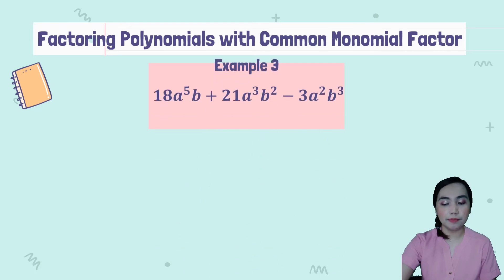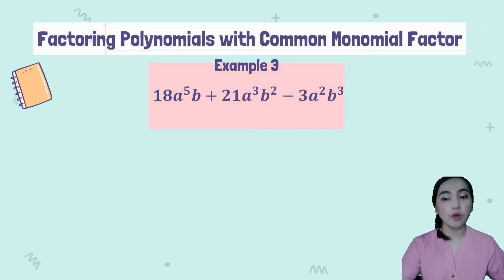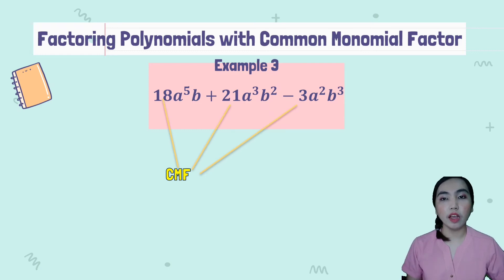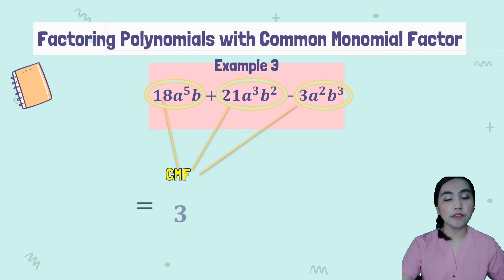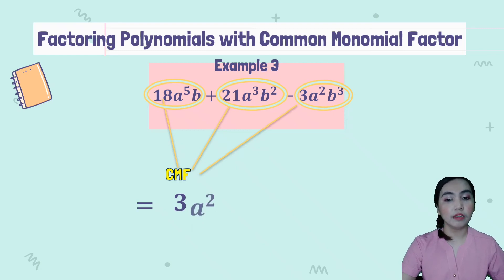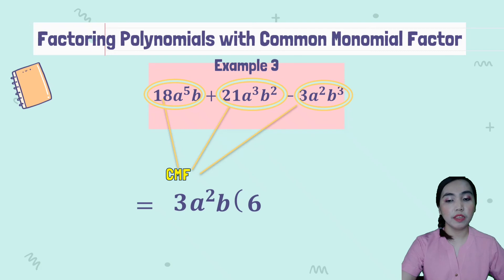I-try naman natin sa trinomial. So trinomial, we have 18a⁵b plus 21a³b² minus 3a²b³. So kukunin na natin yung CMF nila. So 18, 21, and 3 — anong GCF? Tama, 3. GCF na 3. At sa variable naman na a, kung ano yung pinakamababang exponent, yun ang kukunin natin — so a squared. Sa b, b. So in getting the other factors: 18 divided by 3 is 6. a⁵ divided by a² is a³. And b divided by b is 1, so hindi na siya kasama.